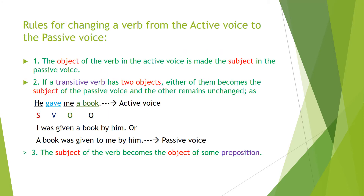Now let's move toward the rules. Rules for changing a verb from the active voice to the passive voice. Every thing we noticed in those examples — each thing has some rule. Rule number one: the object of the verb in the active voice is made the subject in the passive voice. This is the easiest rule. As I have been telling you repeatedly: the object in active voice, when we convert it to passive, becomes the subject, and the subject becomes the object.